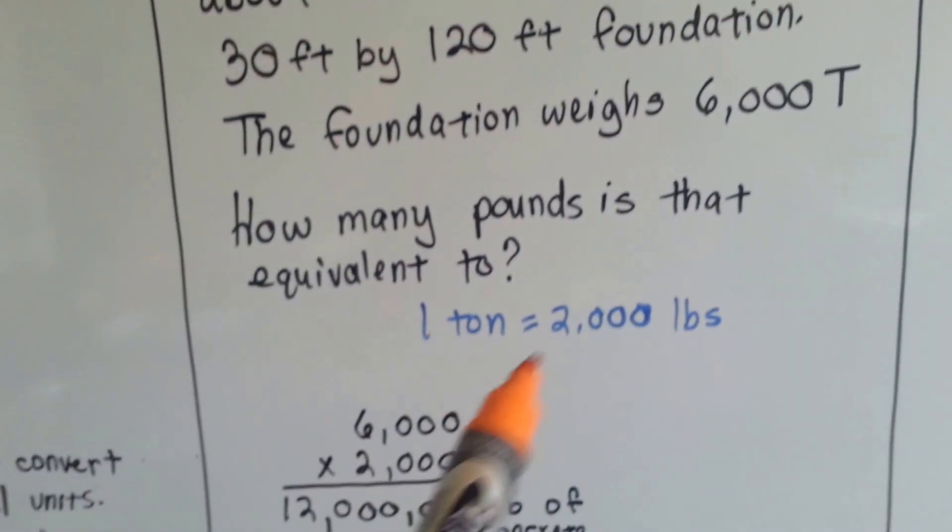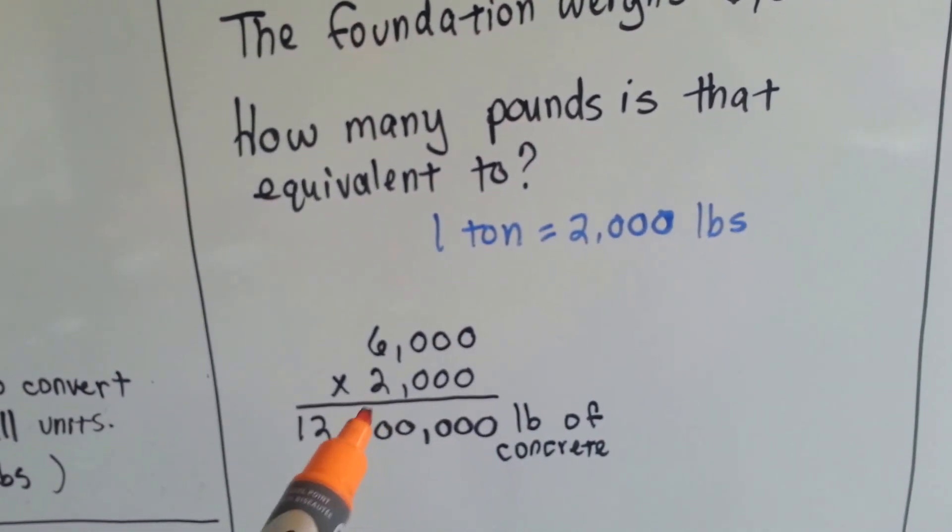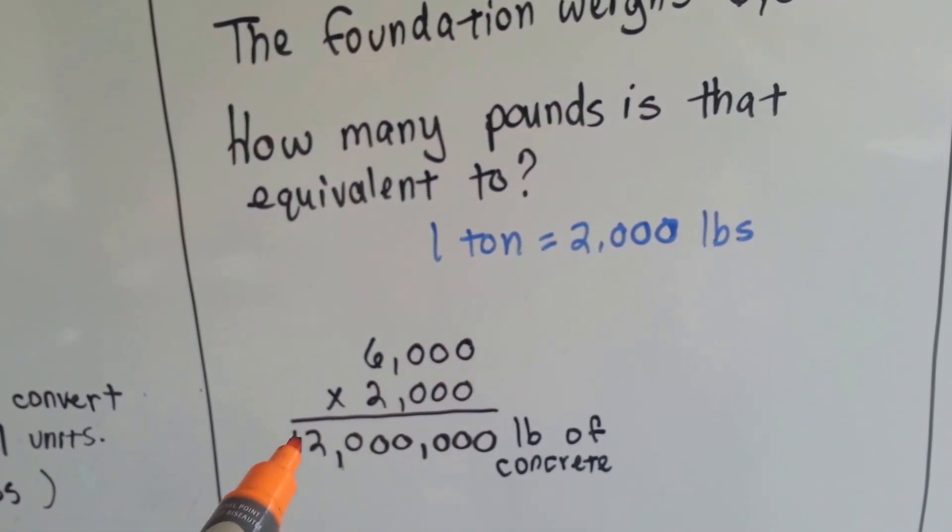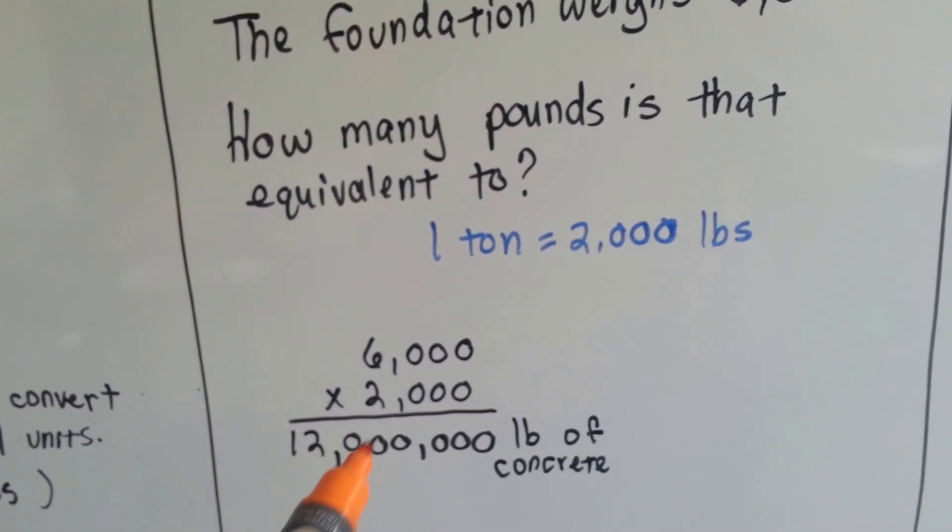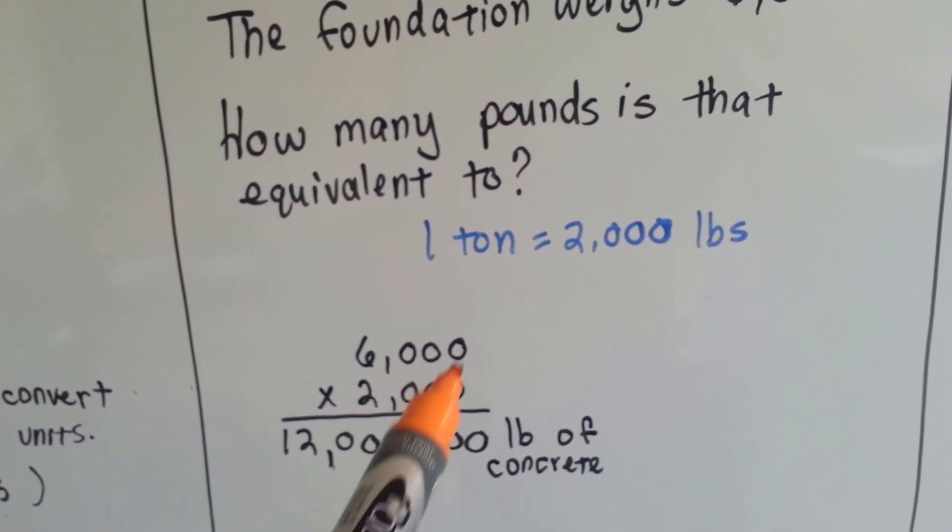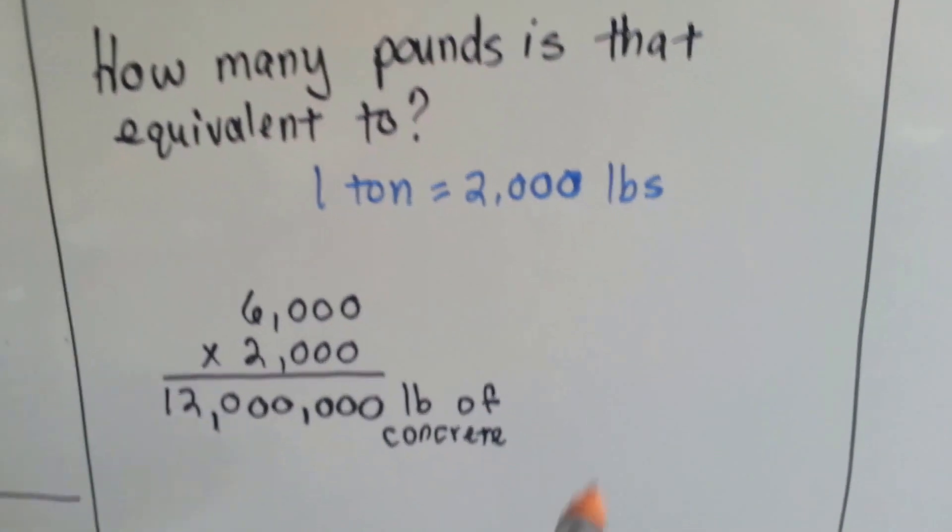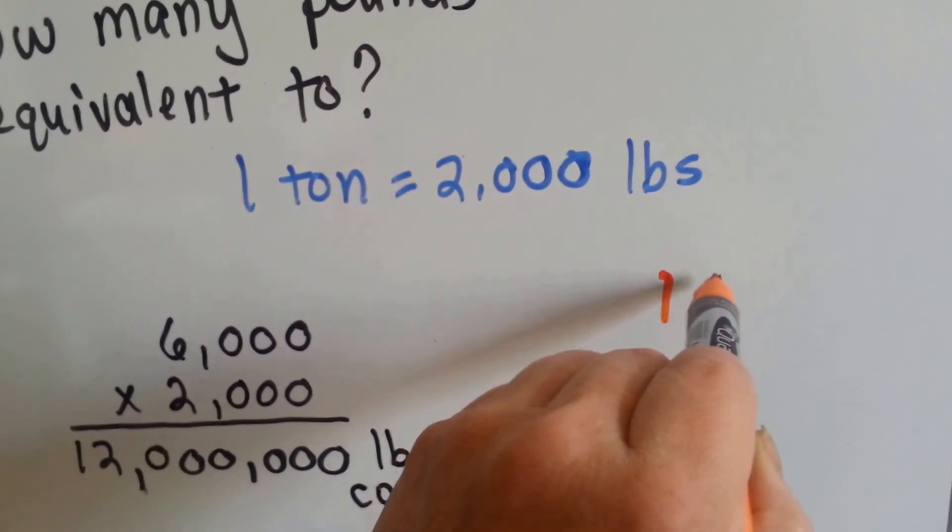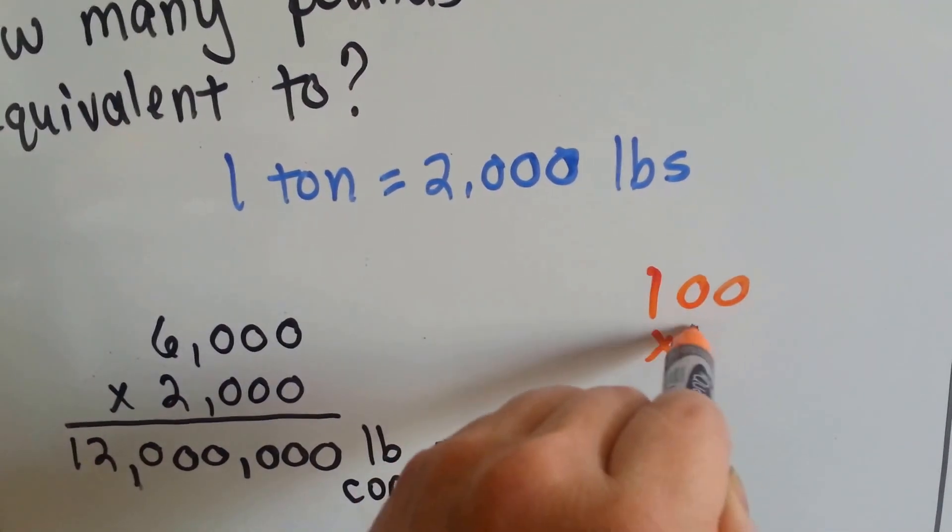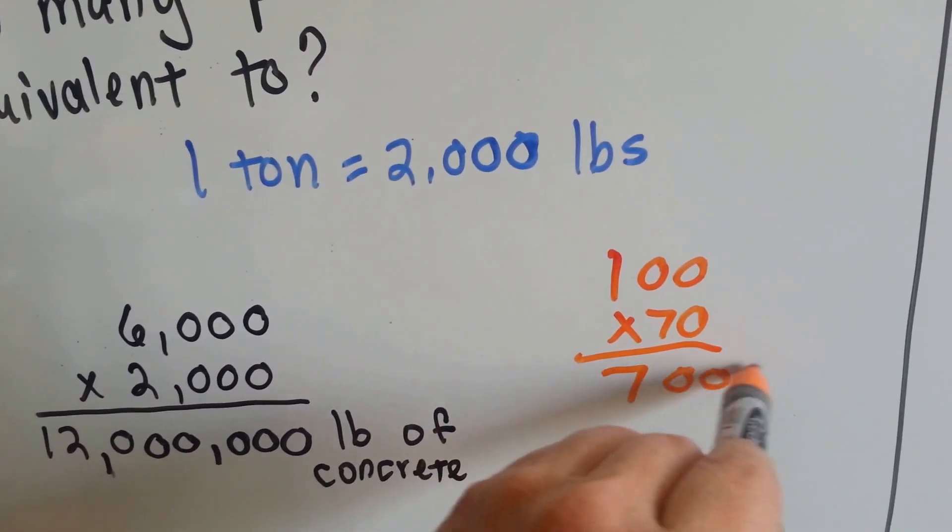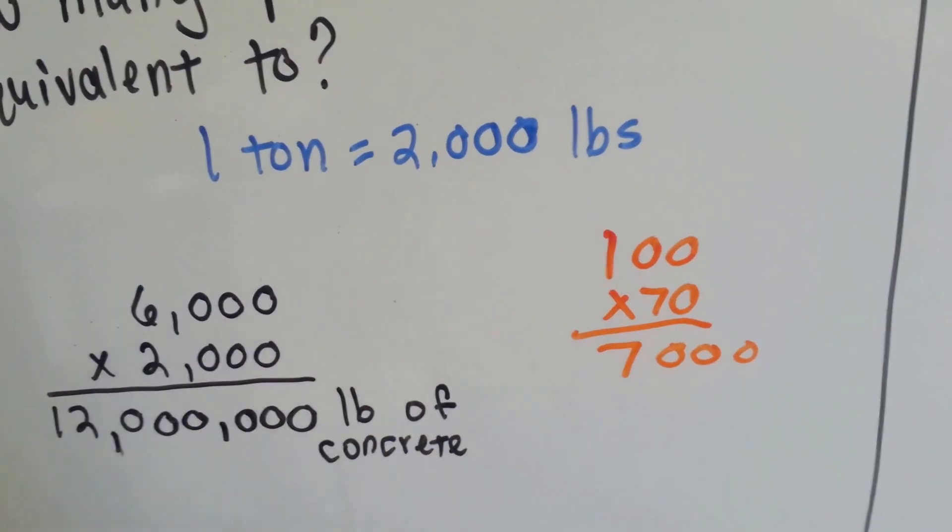So we multiply 6,000 times 2,000. We get 2 times 6 with 6 zeros. 2 times 6 is 12, and we add the 6 zeros that are in the problem. Believe it or not, this works. Did you know that if you multiply 100 times 70, that you could just say 7 and 3 zeros and do mental math like that?